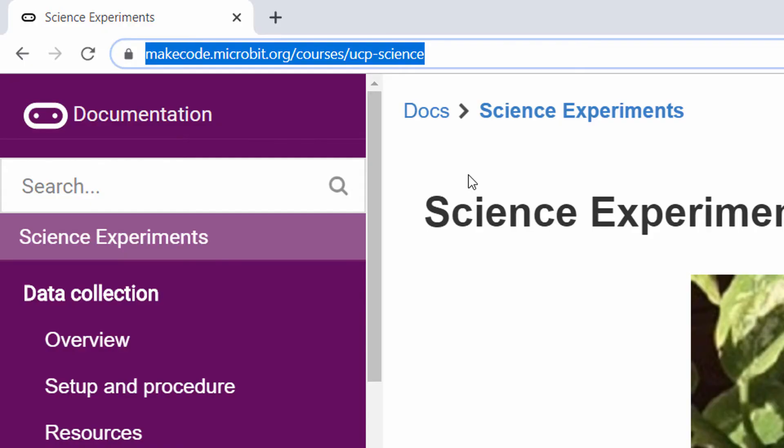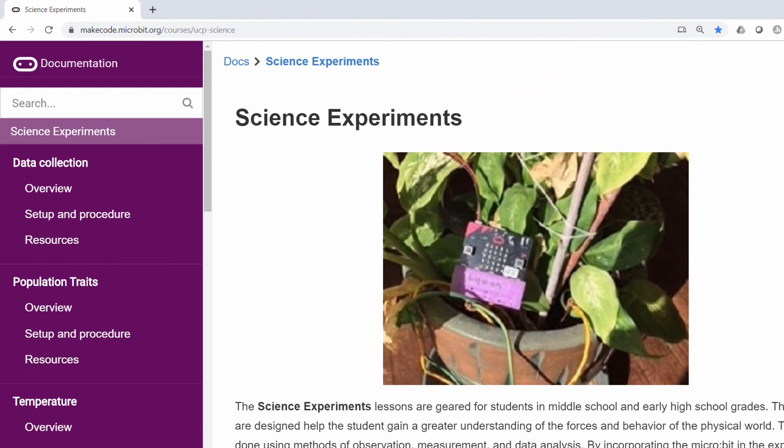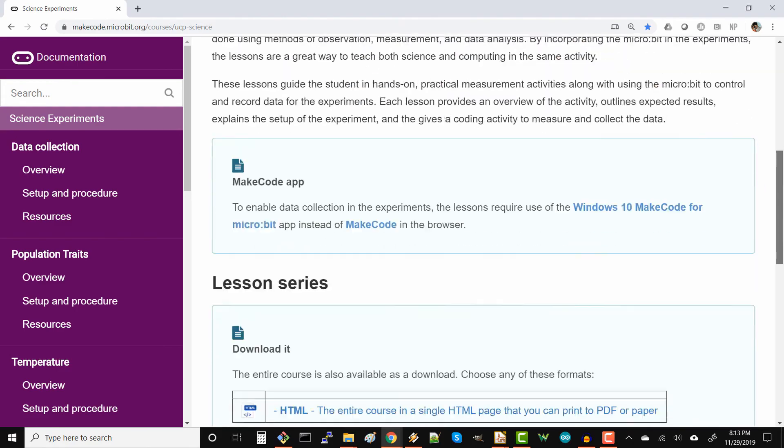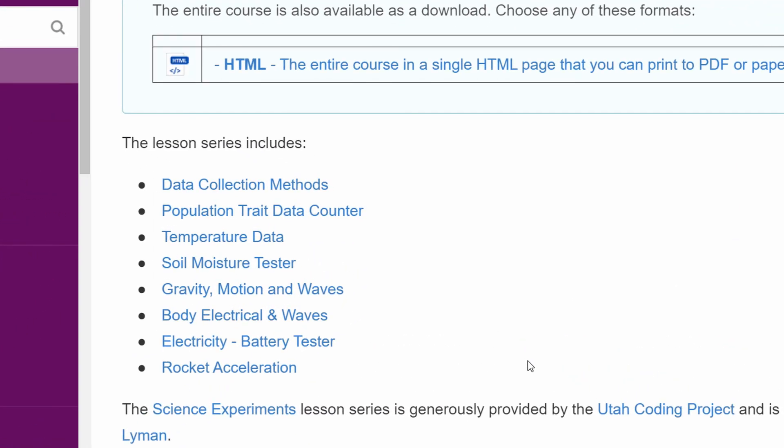To take it to the next level, you can connect a servo to the micro:bit so that it dumps a little bit of water into your plant each time it detects that the soil is getting too dry. This is the beginning of your fully automated watering system. I highly recommend checking out the UCP Science pages on the MakeCode site if you'd like to get more project ideas like this one. Good luck in your horticultural science adventures, and with that, I need to go install about a dozen very annoying soil moisture alarms in my vegetable garden.